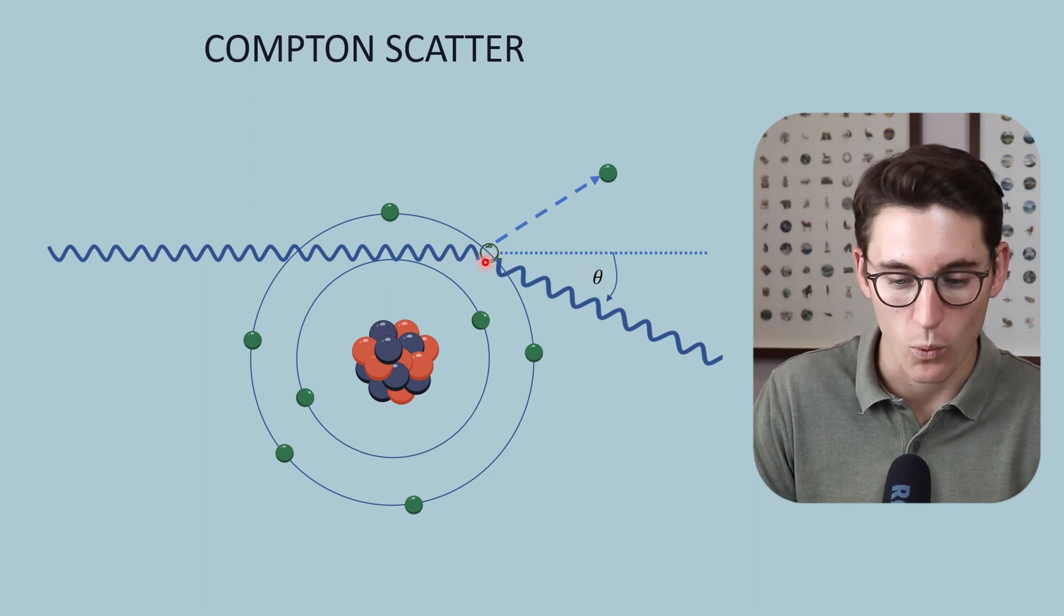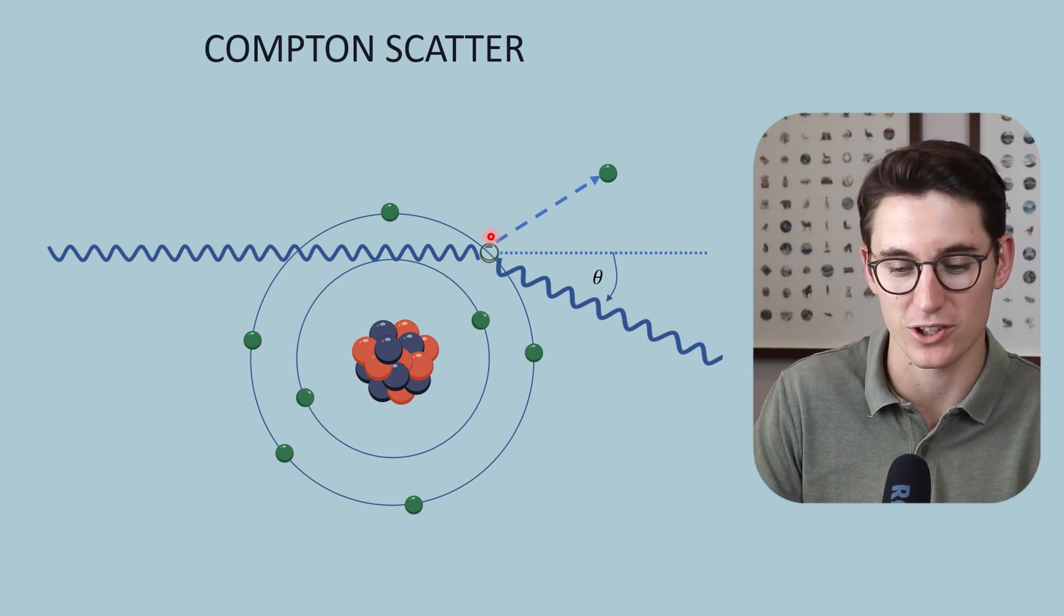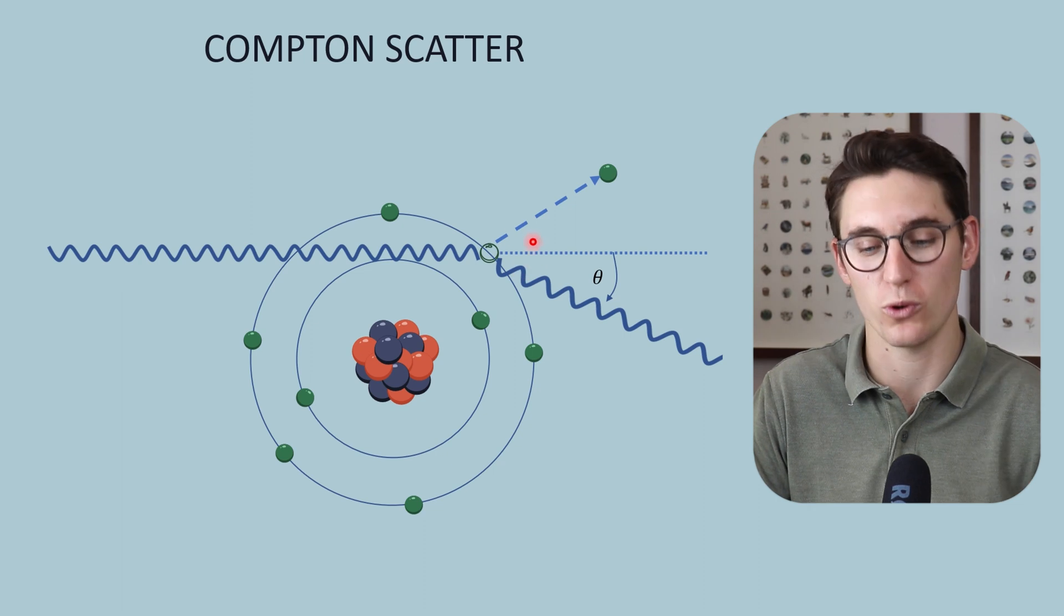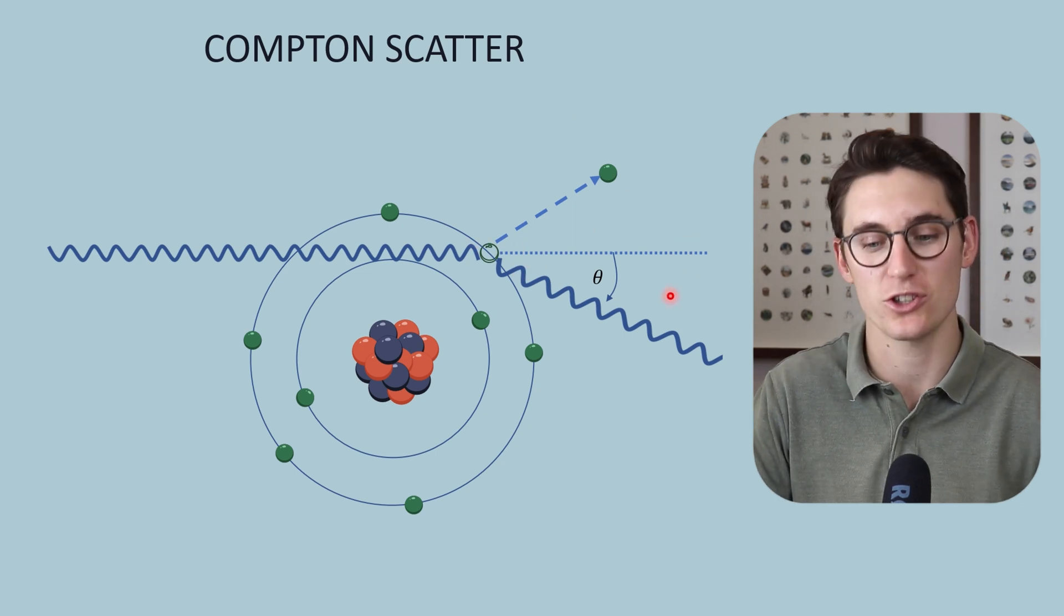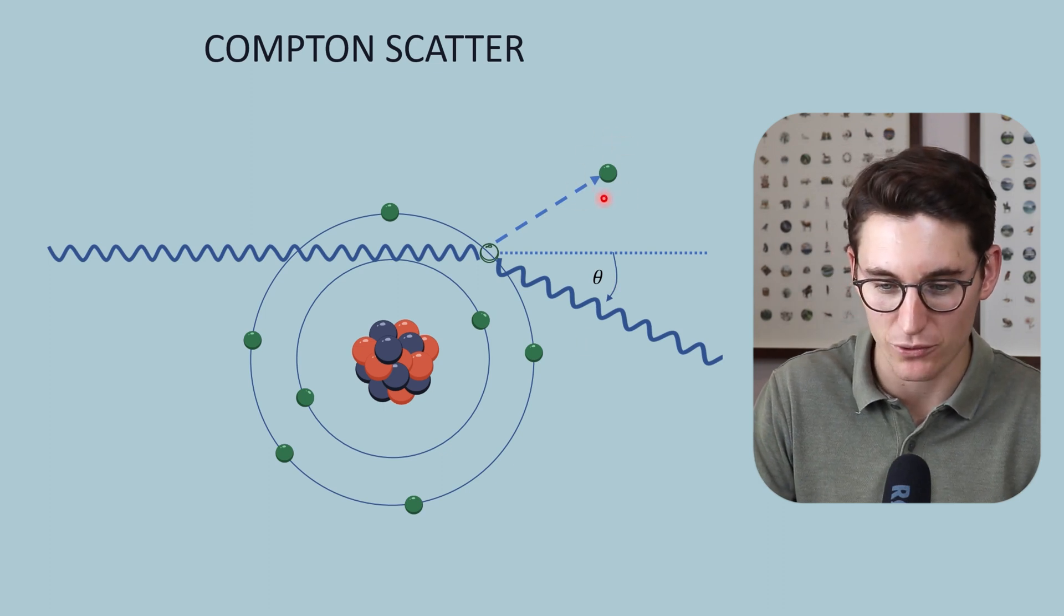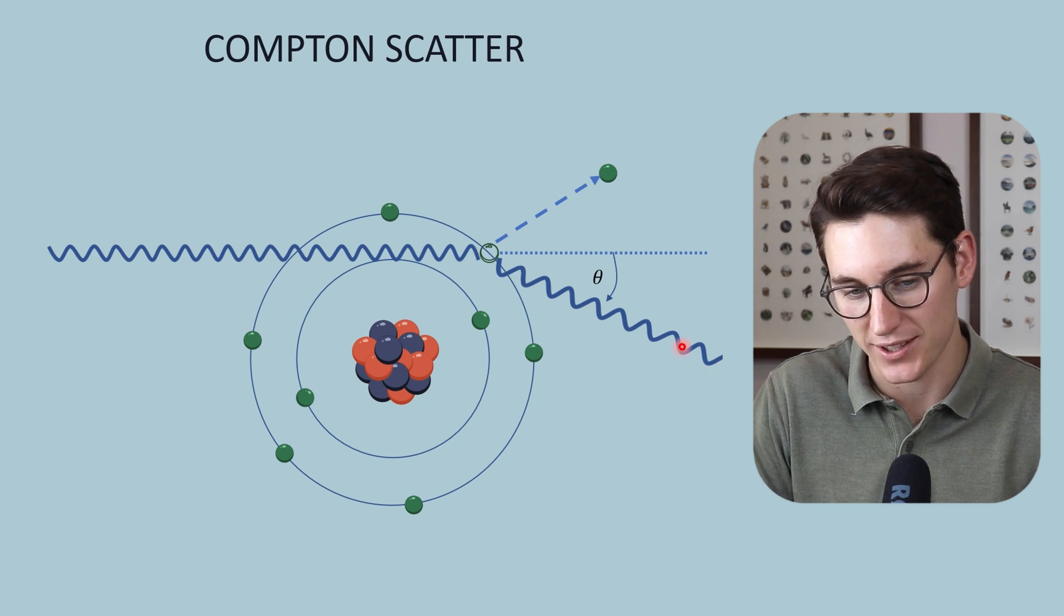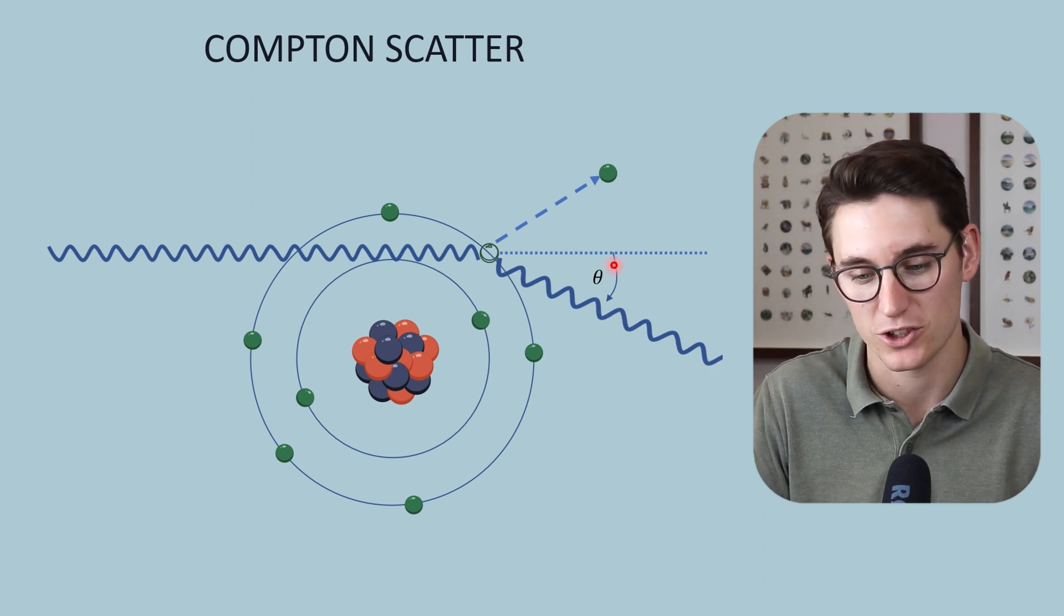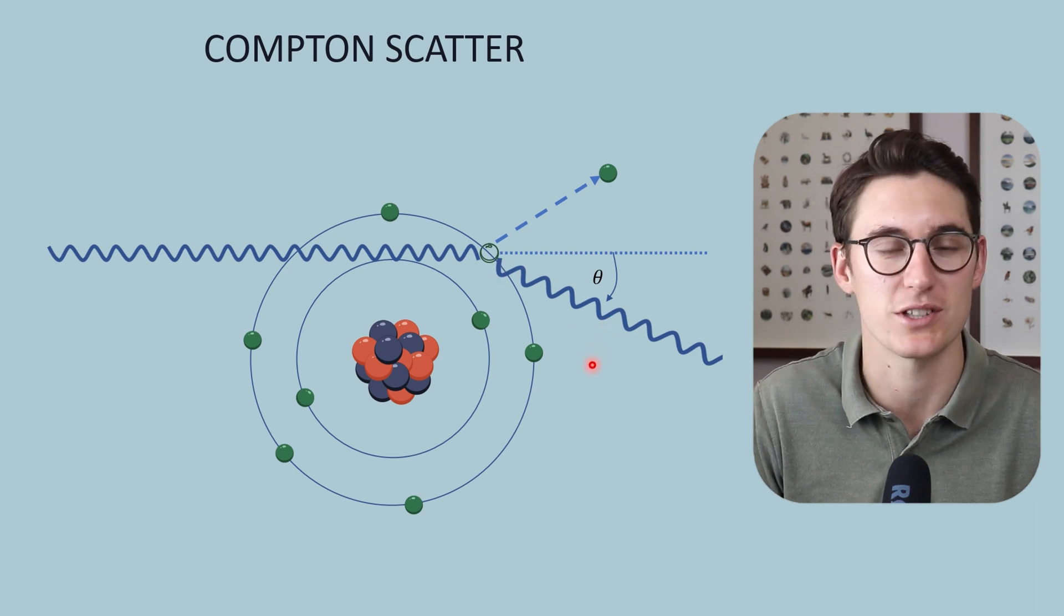You may be wondering, what about the binding energy? Well, in tissues, for our valence electrons, the binding energy is so small that it's actually inconsequential in these calculations. What we need to know is the larger the scatter angle, the more energy that's been conferred to this photoelectron and the less energy this Compton scatter has. As we increase the scatter angle, we decrease the energy of Compton scatter.